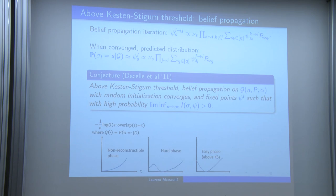The non-backtracking matrix is asymmetric, so we leave the realm of Hermitian matrices. It encodes the number of non-backtracking walks on graph G: the (E,F) entry of B^k counts non-backtracking paths of length k+1 edges starting with edge E and ending with edge F. The conjecture that spectral methods based on B succeed above the Kesten-Stigum threshold is strongly believed but not fully proven, and it led Krzakala and co-authors to try to propose something else.